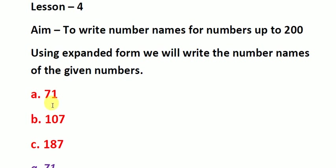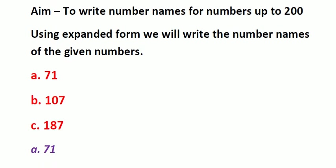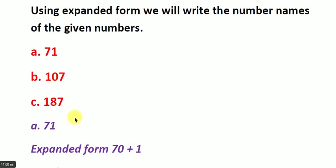The examples which I have taken are 71, 107, and 187. First we will write the expanded form of 71. What is the expanded form of 71? 71 has 7 tens and 1 ones. So the expanded form of 71, as you can see here, is 70 plus 1.